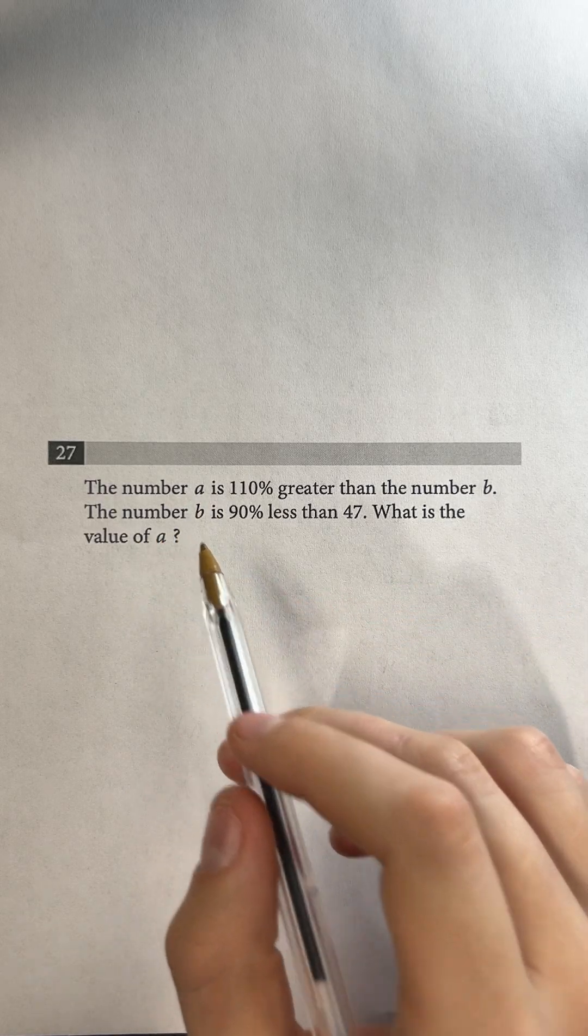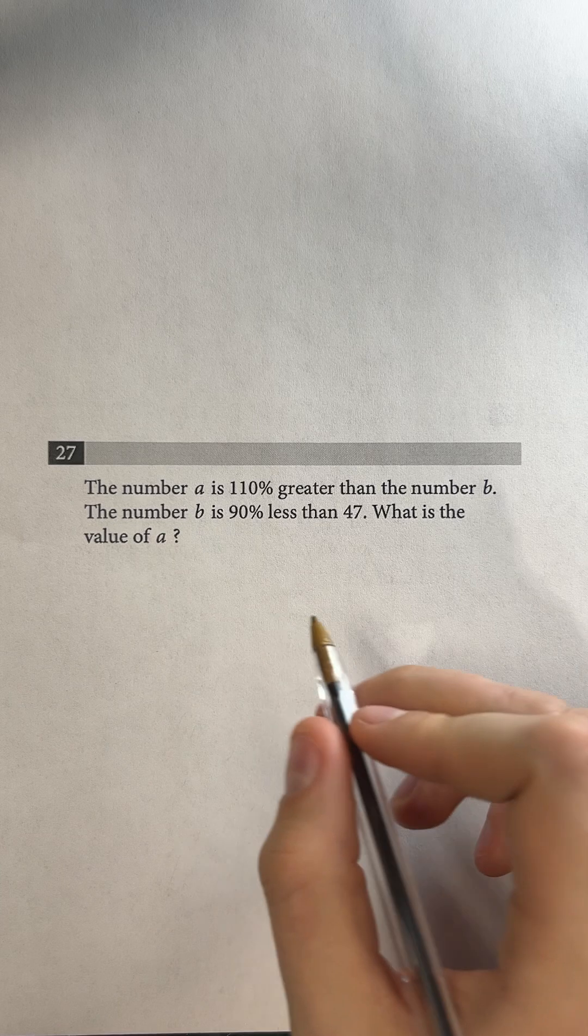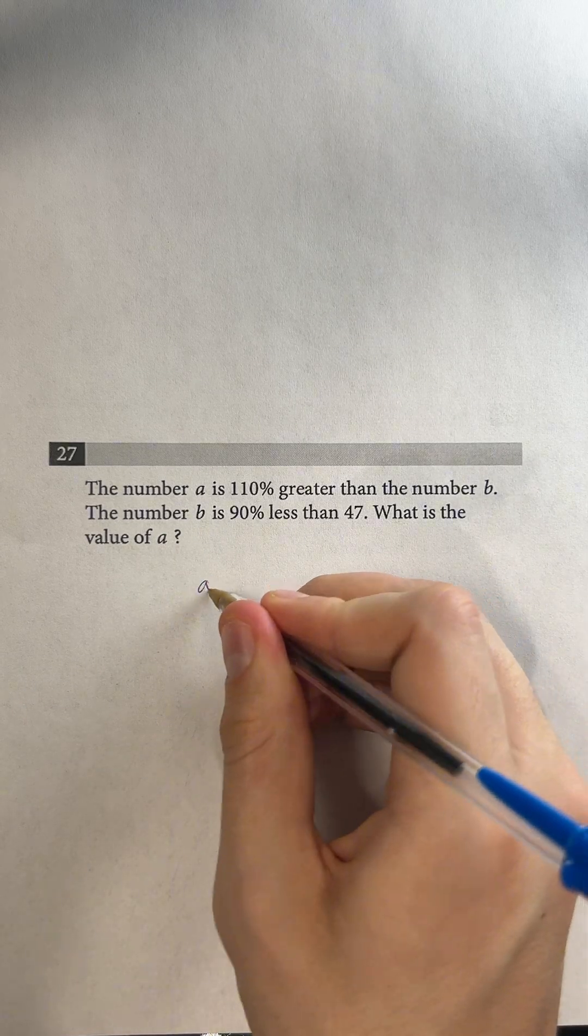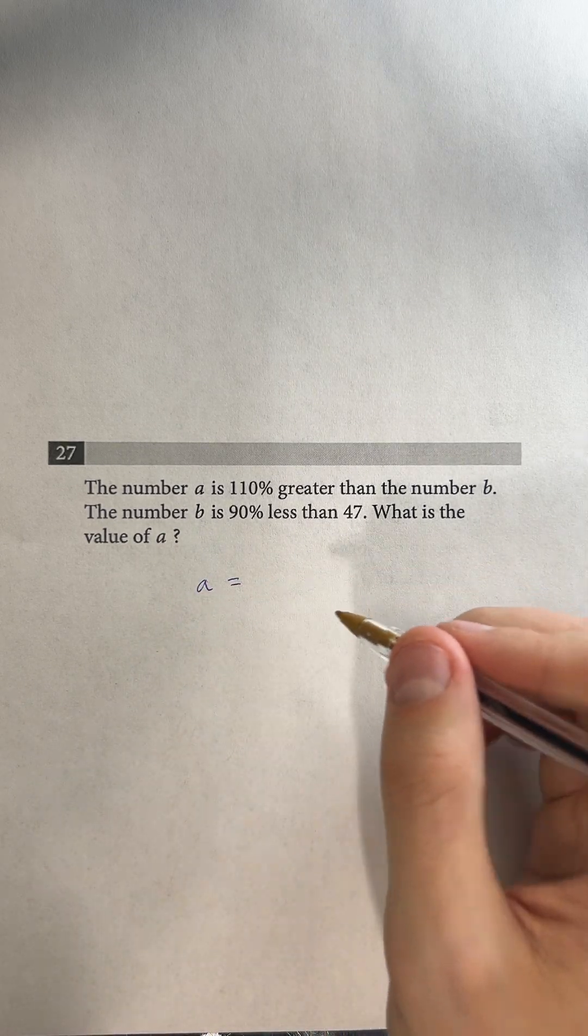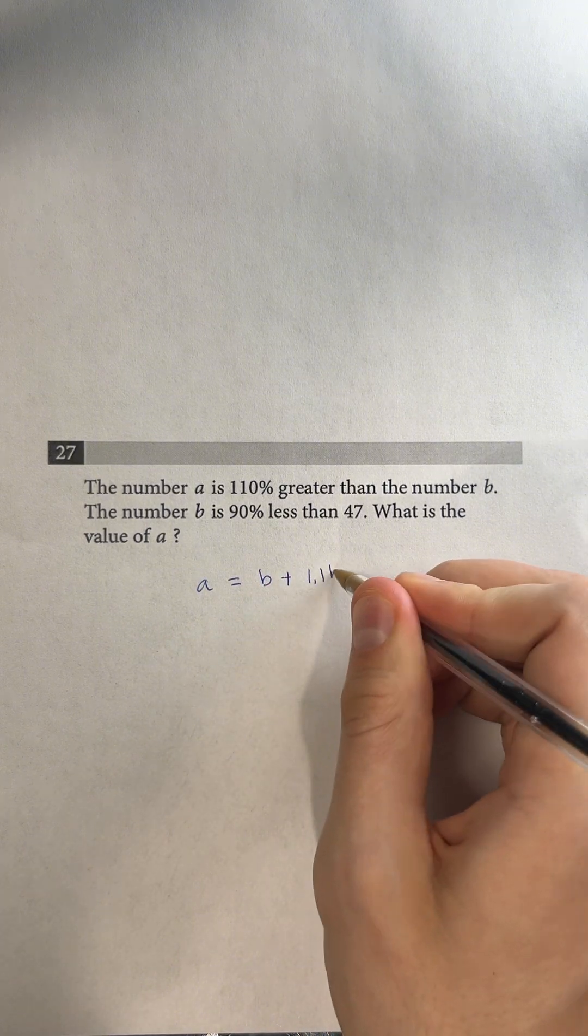Question 27. The number A is 110% greater than the number B. Okay, so before we keep reading, I'm going to write that out. A is 110% greater than B, which means that it's going to equal B plus 1.1B.